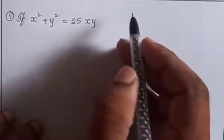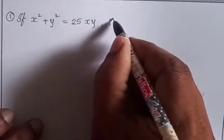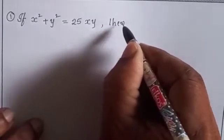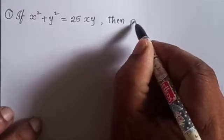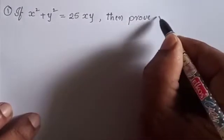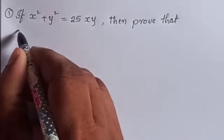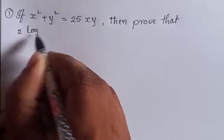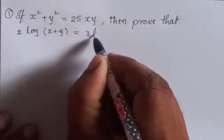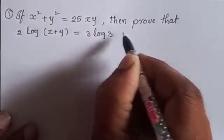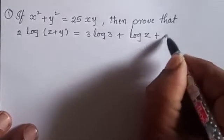If x square plus y square is equal to 25xy, then prove that 2 log of x plus y is equal to 3 log 3 plus log x plus log y.